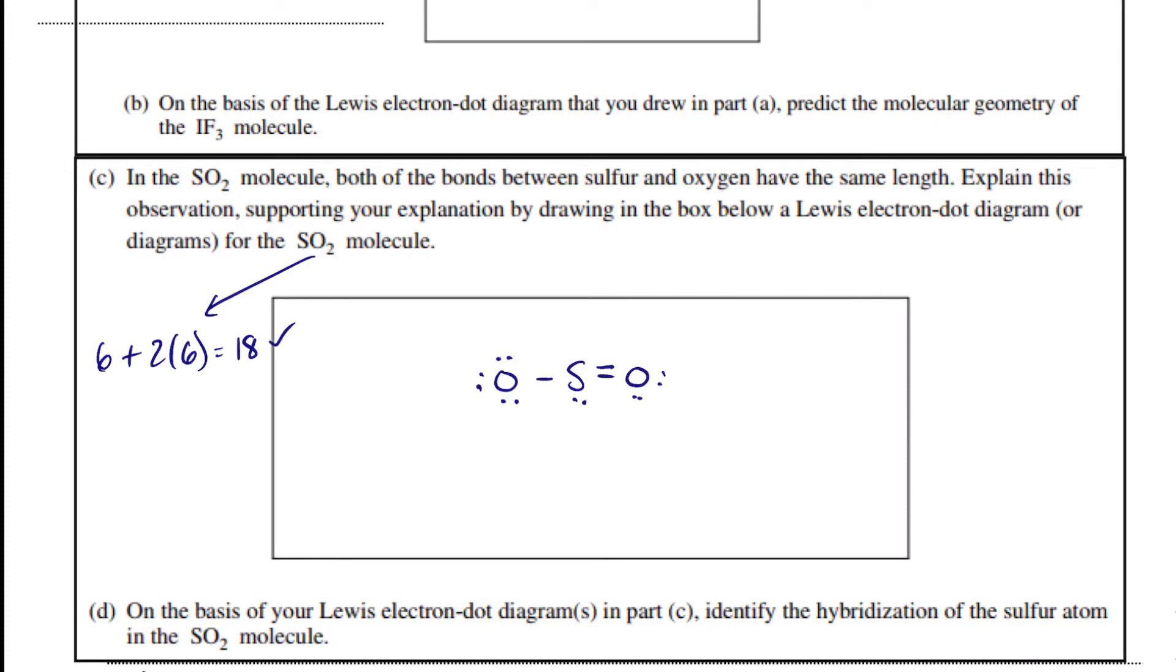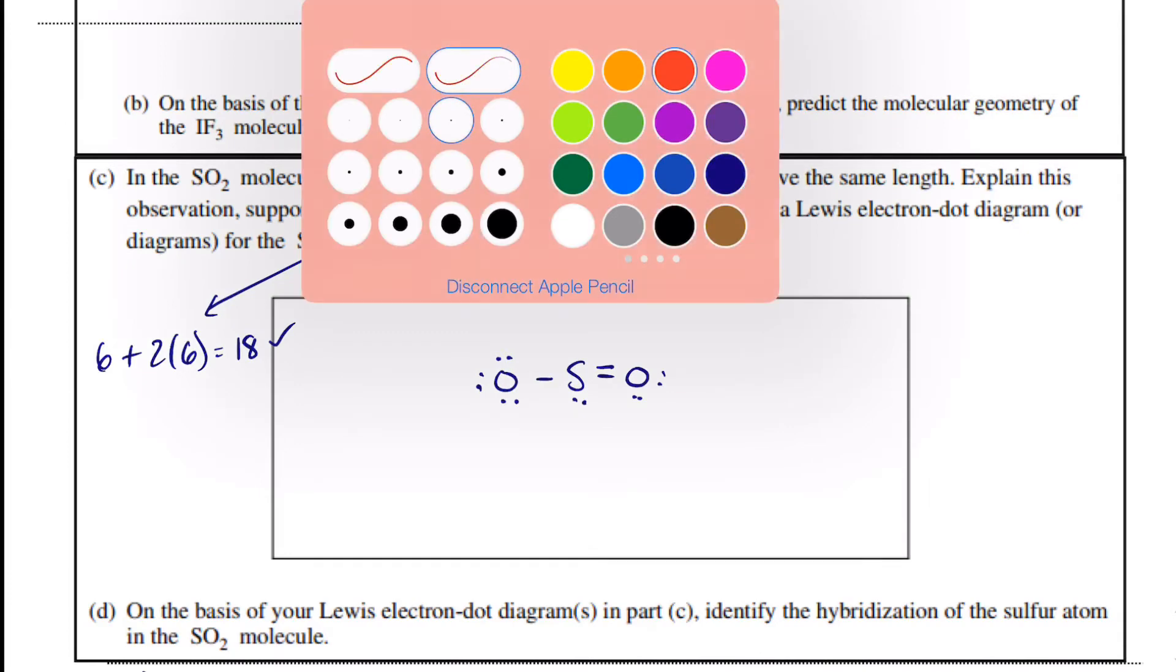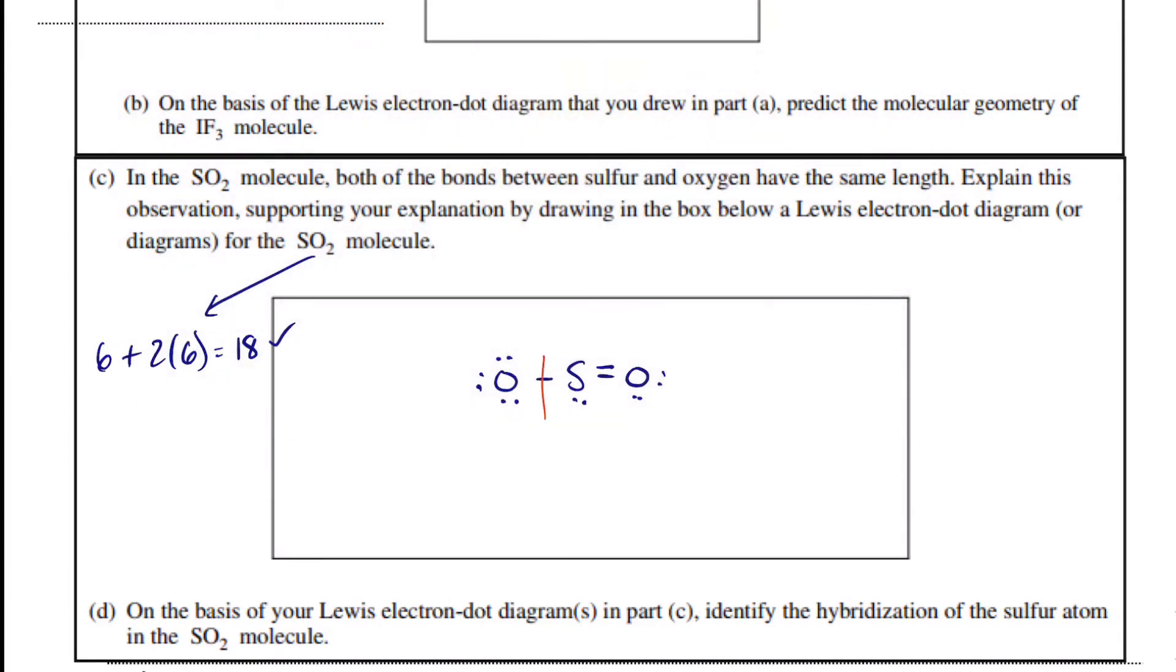But sulfur is a row 3 element, so what we need to do is consider formal charge. So we'll slice our bonds in half, and say oxygen should have 6 valence electrons.